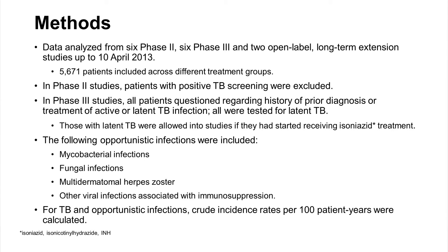In the analysis for this current paper, we defined the following infections as opportunistic. These included mycobacterial infections, fungal infections, multidermatomal herpes zoster cases, and other viral infections associated with immunosuppression. We then calculated crude incidence rates per 100 patient years for all of these infections.